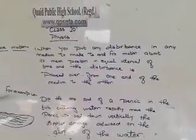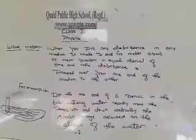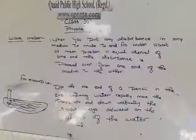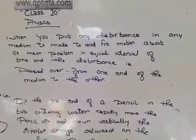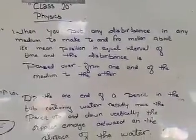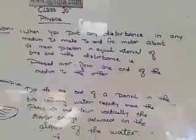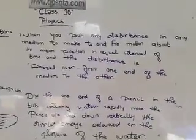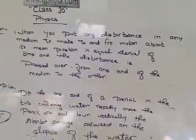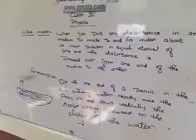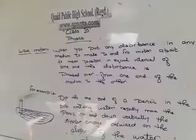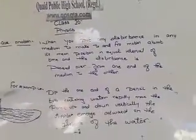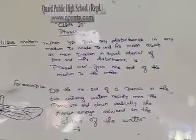So this type of disturbance is known as wave motion. So I will tell you again what is wave motion. Wave motion: when you put any disturbance in any medium to make to and fro about in mean position in equal interval of time, this disturbance is passed over from one end of a medium to the other. Wave motion is a disturbance which you put in any medium to and fro from its mean position.